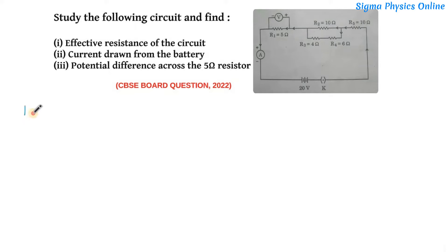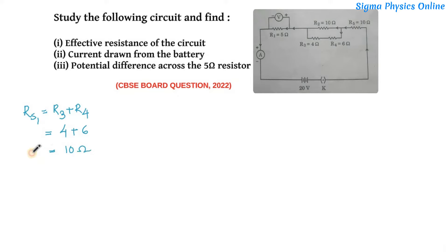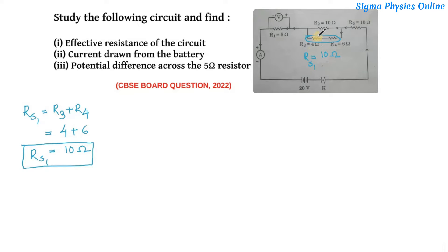For the series combination, let me write this as RS1. RS1 is equal to R3 plus R4. R3 is 4 ohm and R4 is 6 ohm, so together they put up an effective resistance of 10 ohm. RS1 is 10 ohm. This means if we substitute one single resistor having 10 ohm, it will produce the same value of resistance.